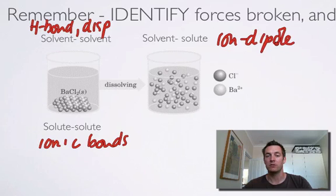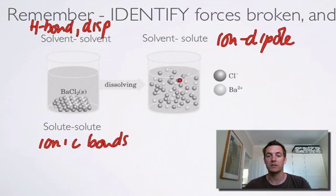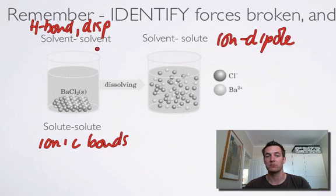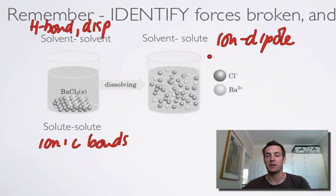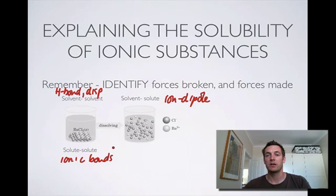So how do we explain that barium chloride, or most other ionic substances, are very soluble in water? Well, we can say that the ion-dipole forces formed between the ions and the water molecules are strong enough to make up for breaking strong ionic bonds in the solute and quite strong hydrogen bonds between solvent particles. Once again it's that systematic explanation — stating what forces we've made, what forces we've broken, being precise about that, and making a comparison between the two. That hopefully explains why substances with very strong bonds can actually dissolve.